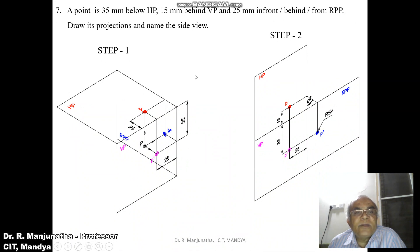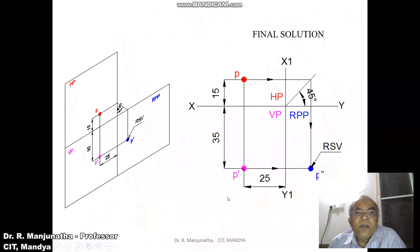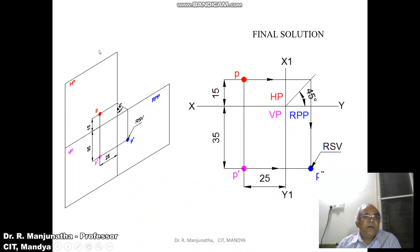When looking from the side view, the distance behind VP will become horizontal when rotated in the profile plane. So you project from the top view to a 45-degree line, where the vertical distance of 15mm behind VP is transferred into a horizontal distance. Then draw a vertical projector from that point on the 45-degree line to the profile view. Since it is behind RPP, this gives you the right side view, p-double-dash.